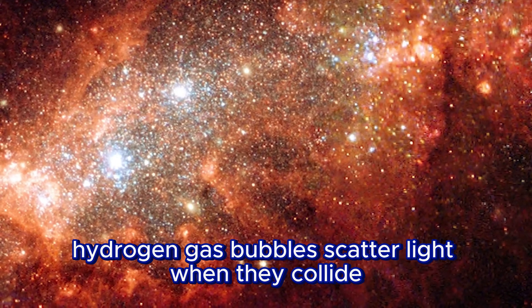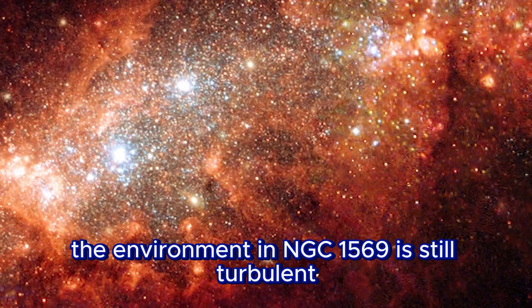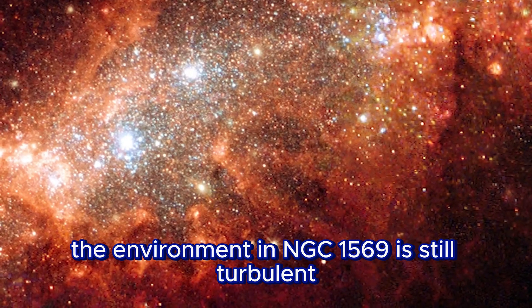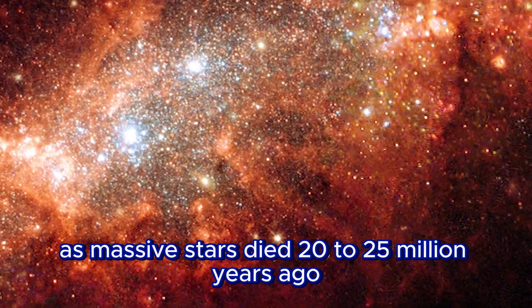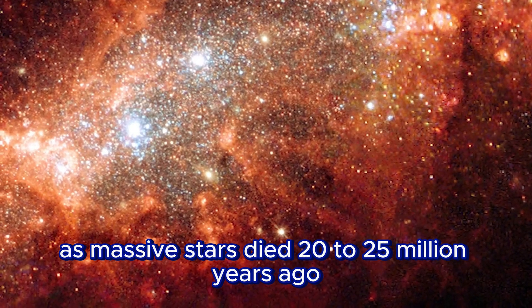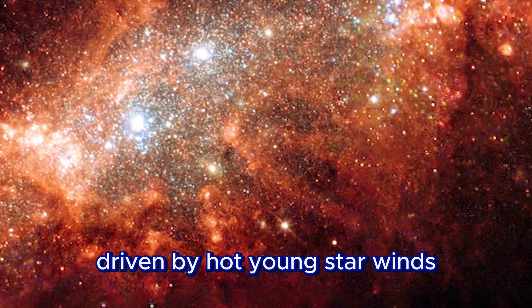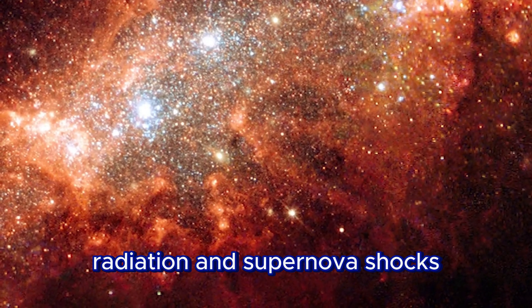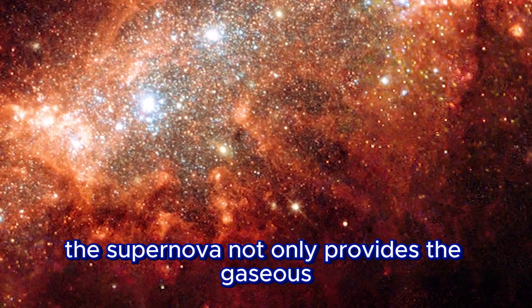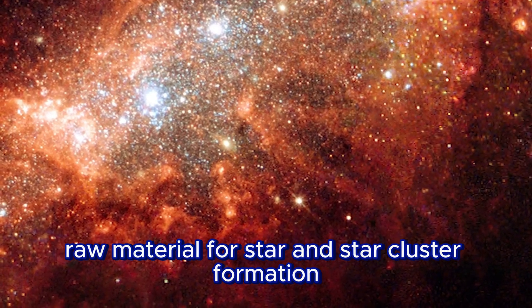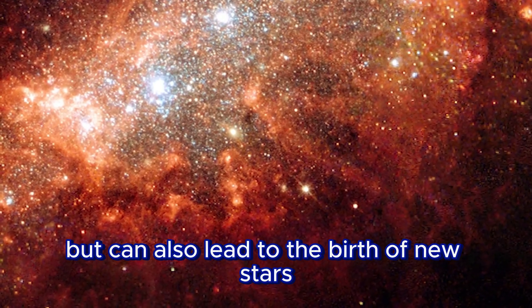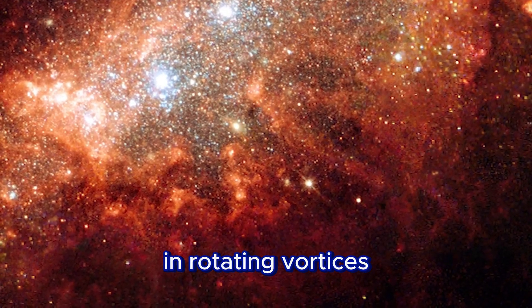Hydrogen gas bubbles scatter light when they collide. The environment in NGC 1569 is still turbulent, as massive stars died 20 to 25 million years ago, driven by hot young star winds, radiation, and supernova shocks. The supernova not only provides the gaseous raw material for star and star cluster formation, but can also lead to the birth of new stars in rotating vortices.